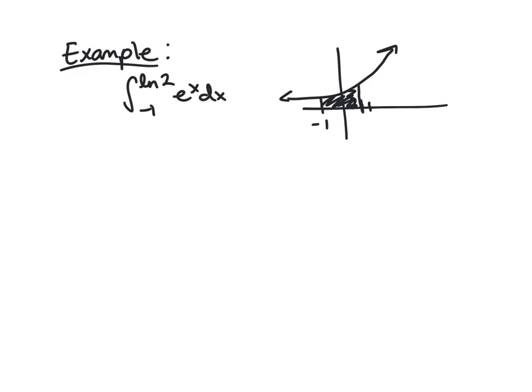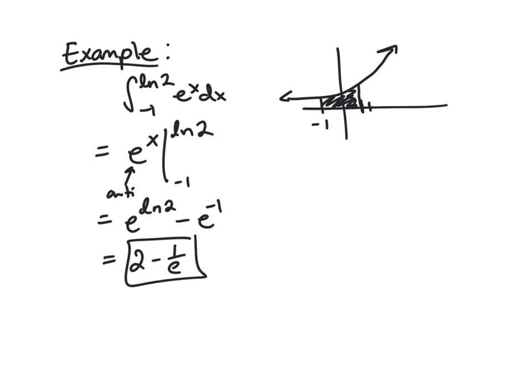Yes, e^x works. So we write this: e^x evaluated from negative one to natural log of two. This bar on the right basically says evaluate at these points and subtract. So e^(ln 2) minus e^(-1). We can simplify: e^(ln 2) is 2, and this is 1/e. That's what that area is - super quick because we know the antiderivative.